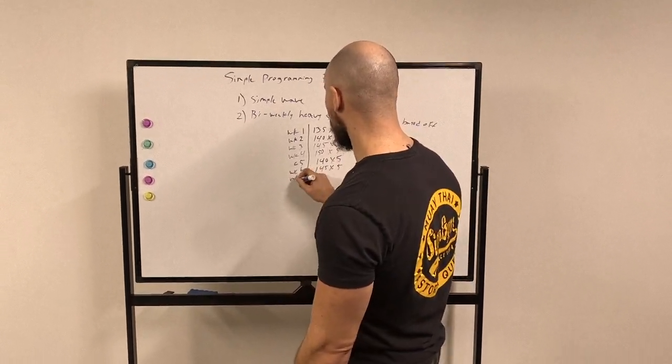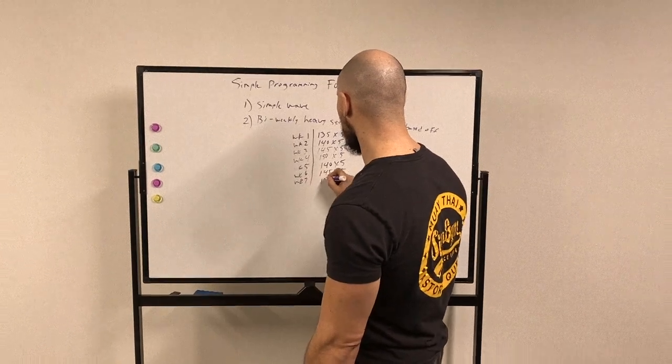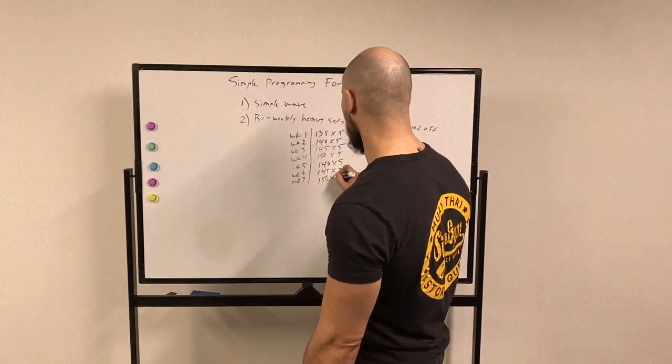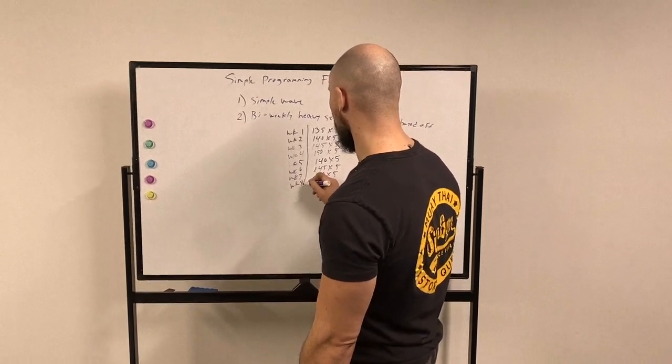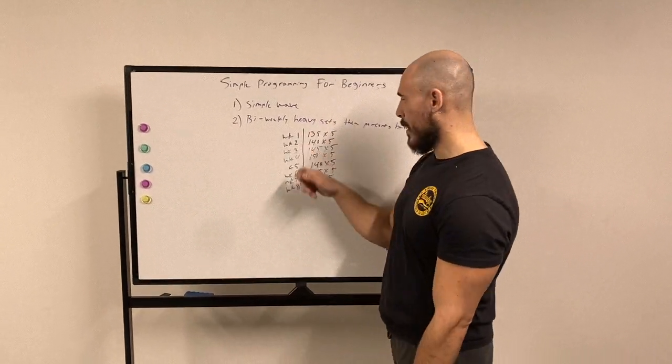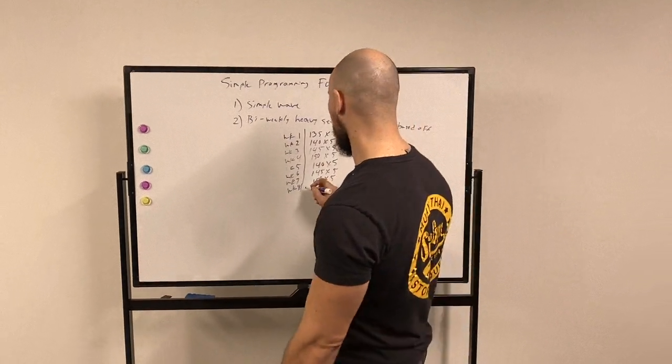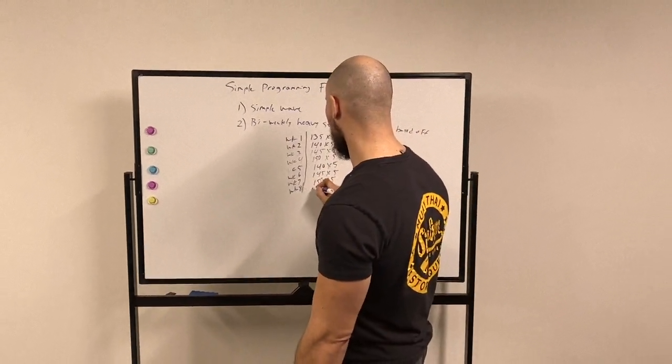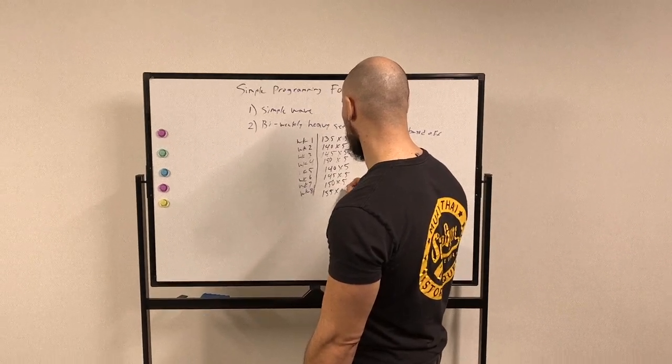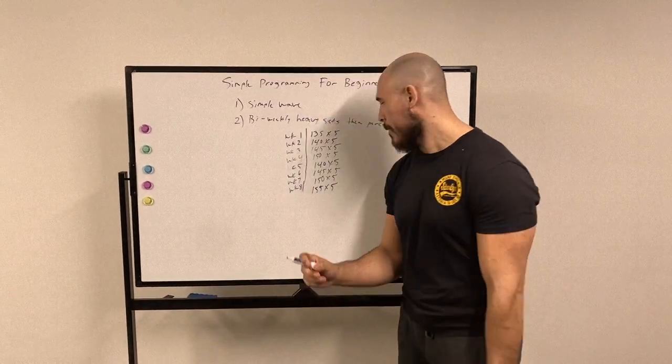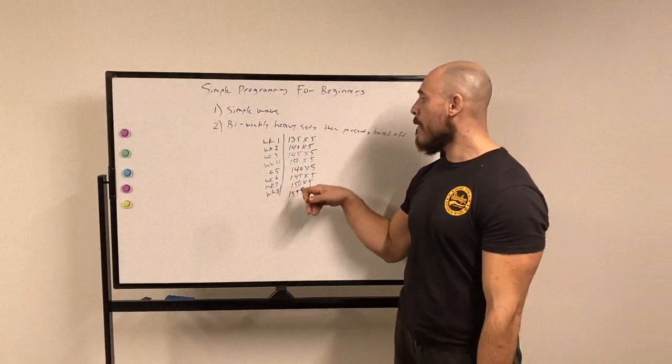Then week eight - and you can see the whole pattern here - every four weeks I'm going to hit my heavier sets. Now I can go up to 155 pounds for sets of five. So it took me a whole other four weeks to hit that heavier set again, those heavier weights.